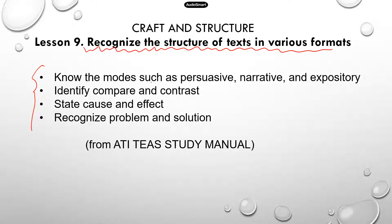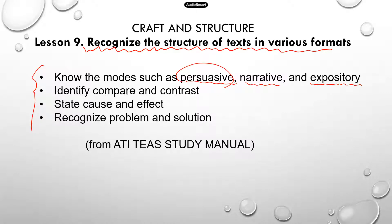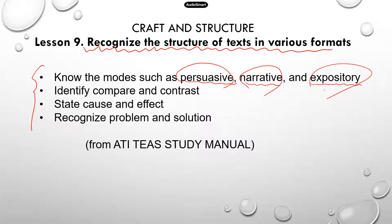You need to know the modes such as persuasive, narrative, and expository — those are really different types of passages. If it's persuasive, the writer is trying to argue about something and convince you of his or her stance or position. Narrative describes an event, so it could be in a story format. Expository is where the writer is trying to explain something, some mechanism or a phenomenon. We'll have more details on the different modes of text.